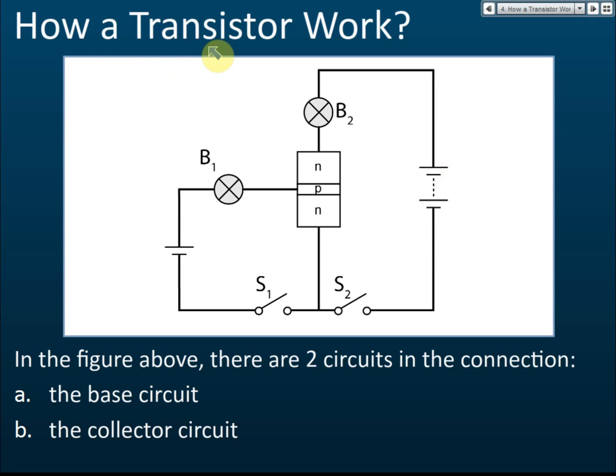To understand how a transistor works, you need to know the two circuits in the transistor. The one connected to the center is the base — the one in the middle is the base. Let's say this is the emitter. The emitter is connected to the base and the collector. So let's say this is the collector.